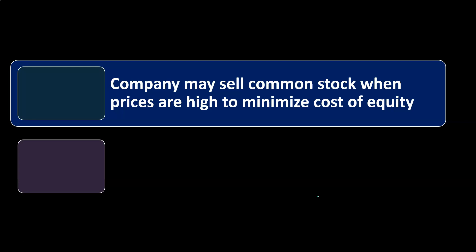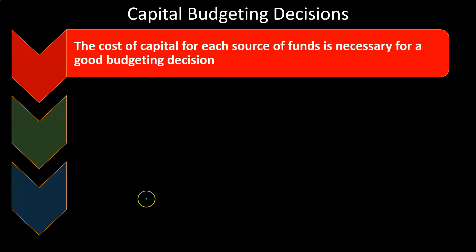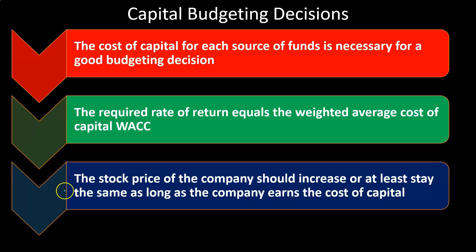A company may sell common stock when prices are high to minimize the cost of equity. A balance between equity and debt is needed to achieve the minimum cost of capital — that's the objective. For capital budgeting decisions, the cost of capital for each source of funds is necessary. The required rate of return equals the WACC. The stock price should increase or at least stay the same as long as the company earns its cost of capital, reflecting good decision-making by the organization.